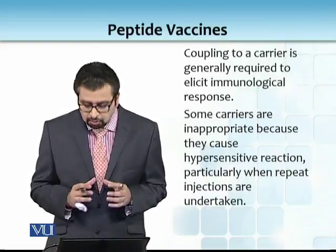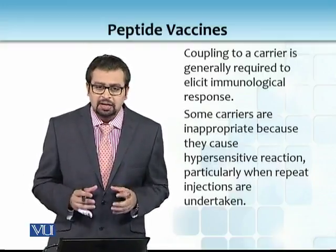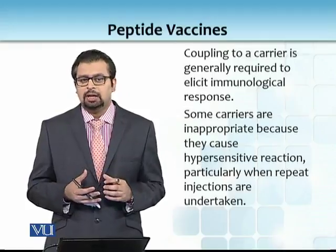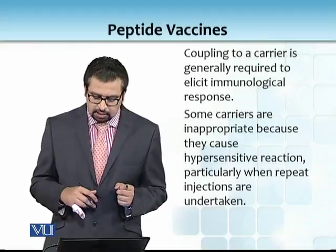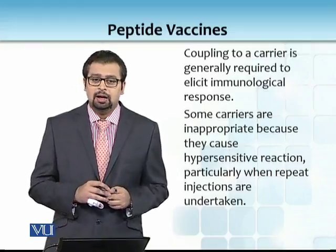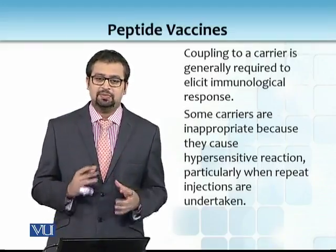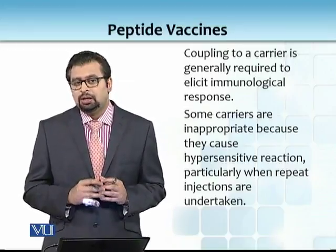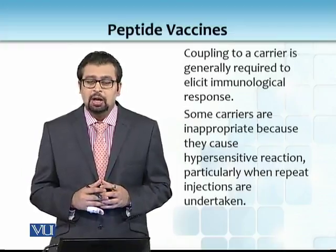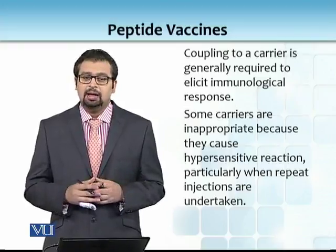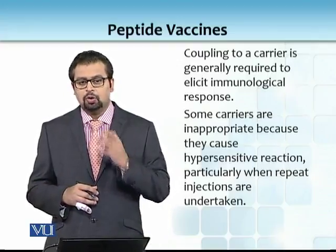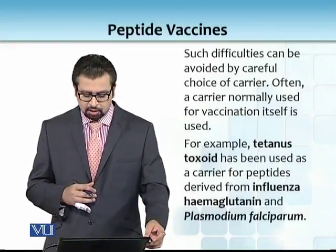Coupling to a carrier is generally required to elicit an immunological response. Ab yahan pe ek bohat bada caveat aata hai — woh caveat yeh hai ke aap apni taraf se peptide ko chota kar rahe hain, lekin doosri taraf you have to put a carrier around it, ta ke aap zyada acha immunological response le sakein. Some carriers are inappropriate because they cause hypersensitive reactions, particularly when repeat injections are undertaken. Kuch log hypersensitive hote hain, to some carriers — jo aapne antigen ke saath diya immunological response zyadah karne ke liye — woh zyada nuqsan pahuncha deta hai.